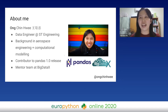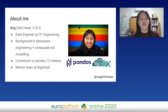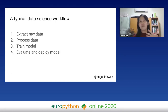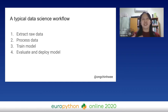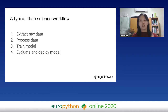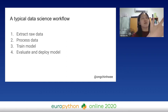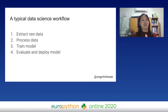That's a bit about me and why I have skin in the game for this presentation. As I mentioned earlier, I work in a small-scale data science team. This is what a typical data science workflow looks like. First, we extract raw data from the data source — it could be from a business or client, like a CSV, database, or an API.